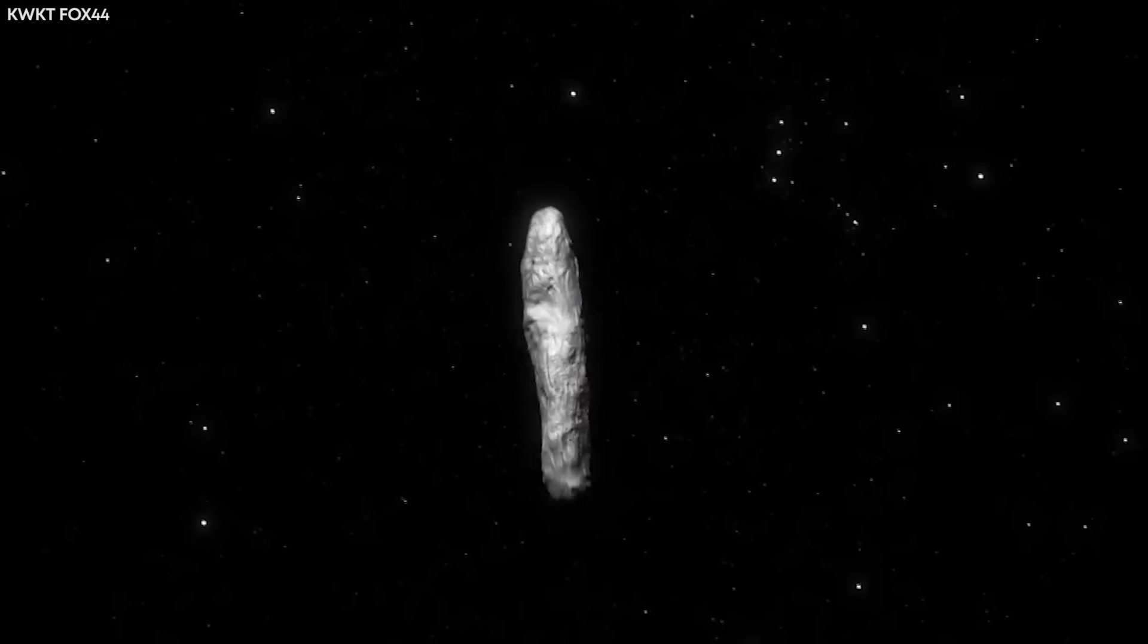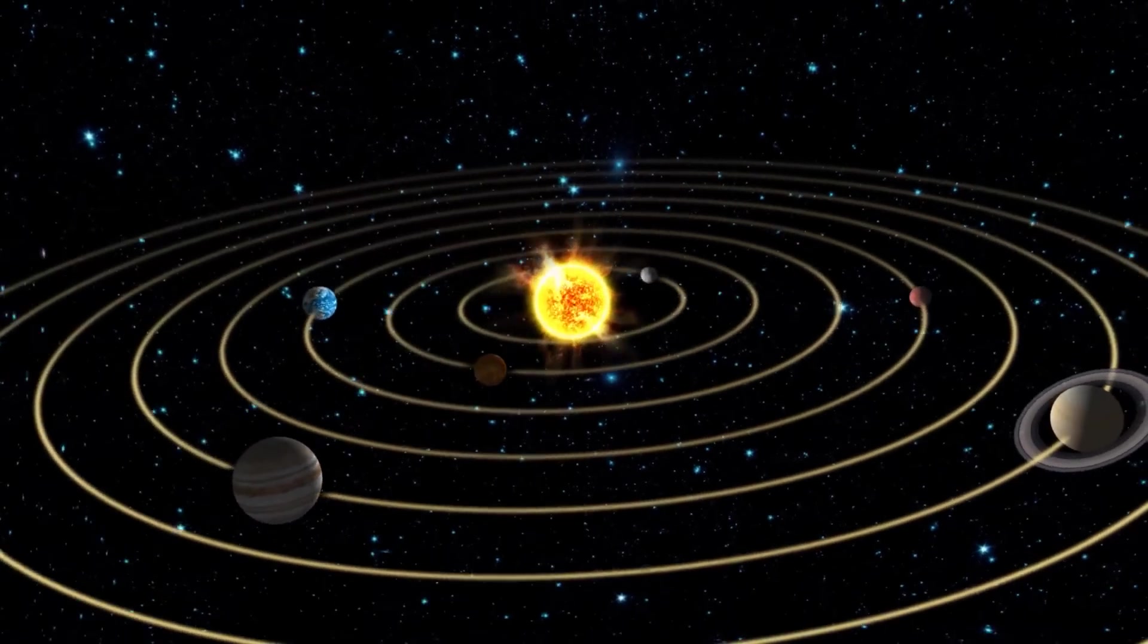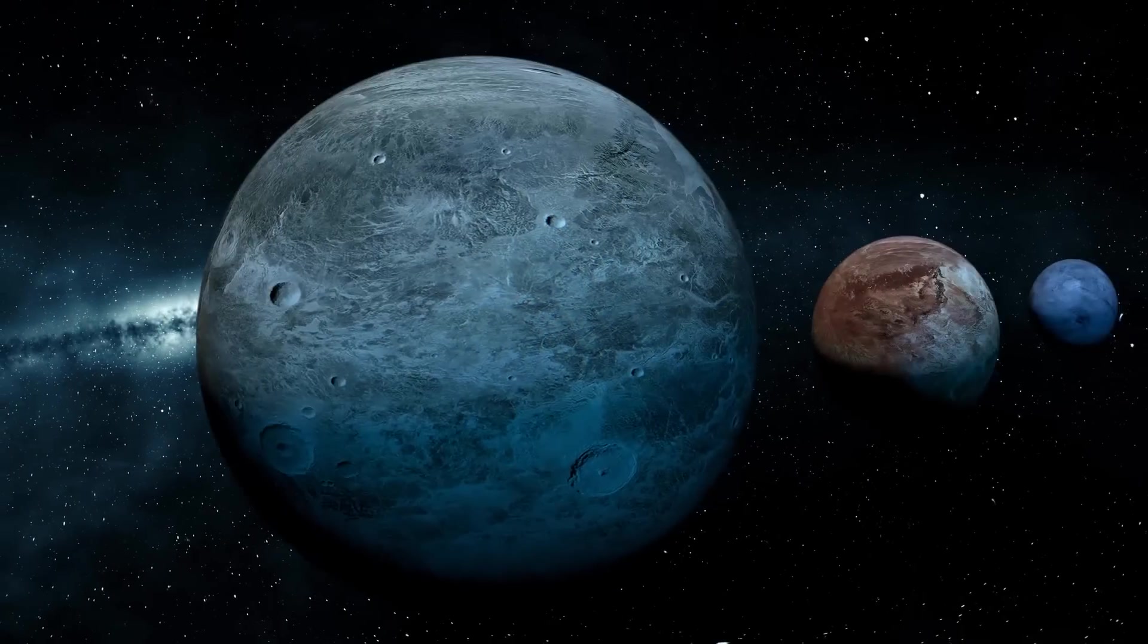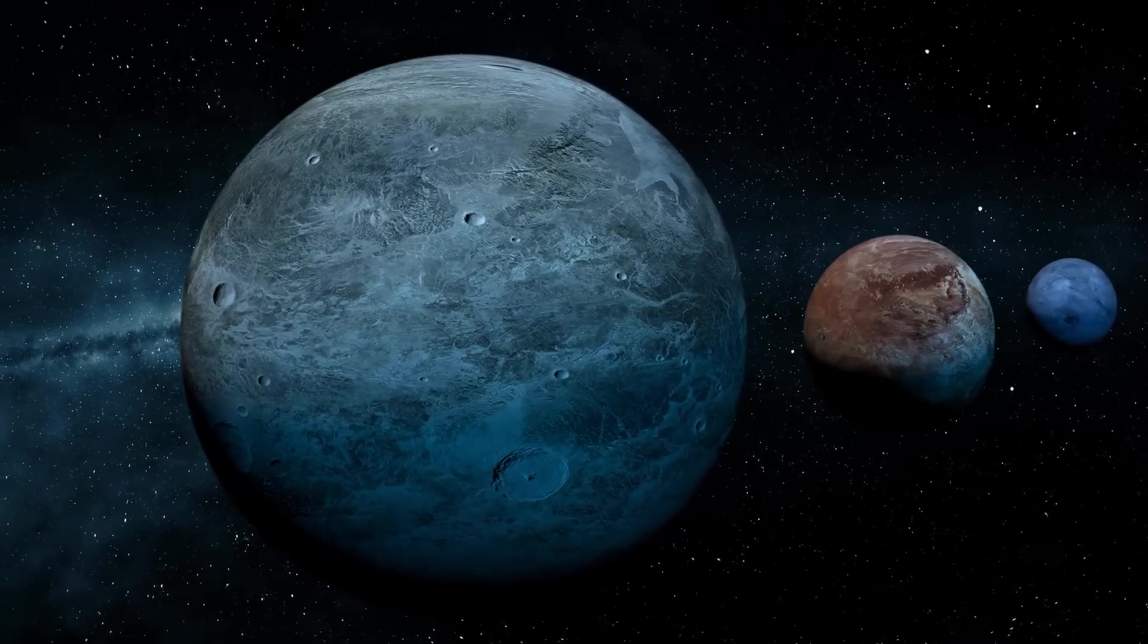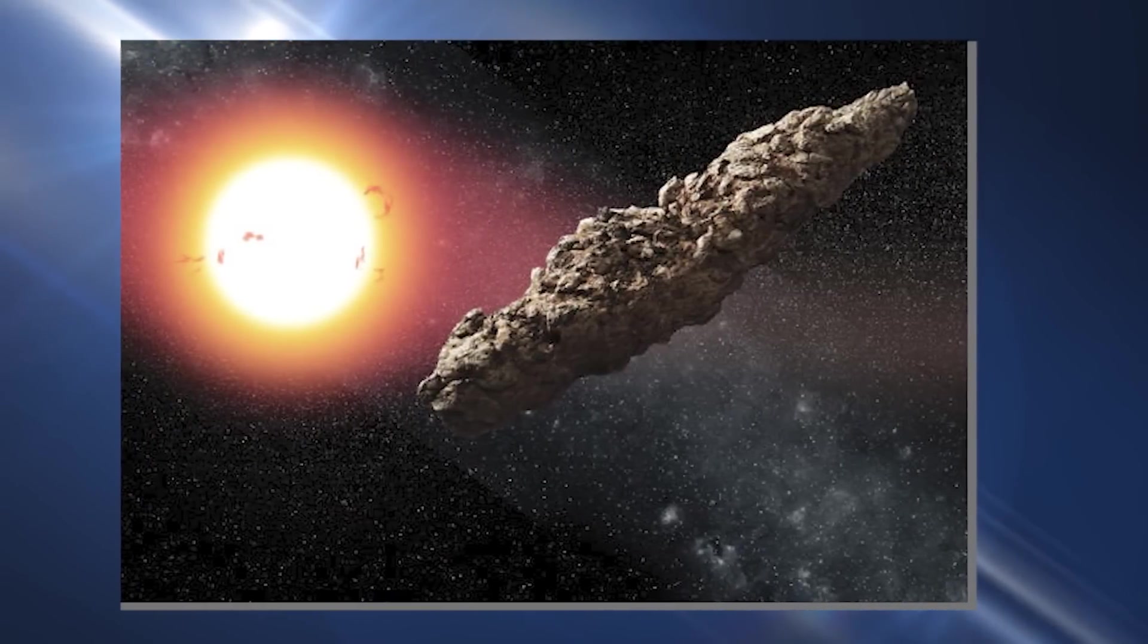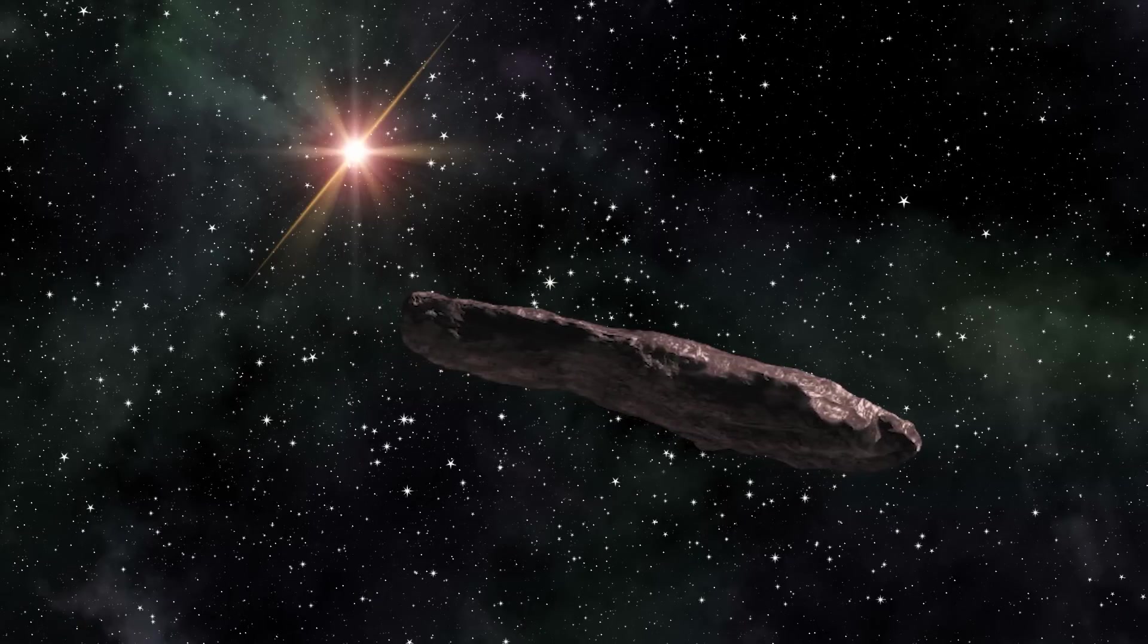After analyzing its trajectory and velocity, scientists concluded that Oumuamua originated from outside our solar system, somewhere in the vicinity of another star. It entered the solar system from above the plane of the planets, swung around the sun, and then departed on a hyperbolic trajectory, which showed that it was headed back into interstellar space.